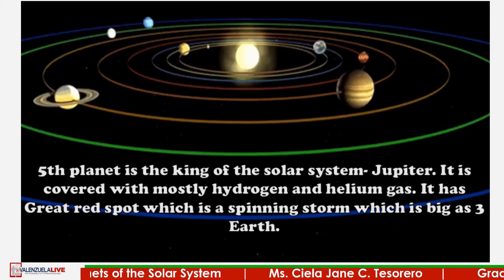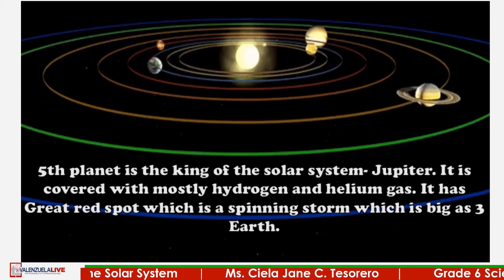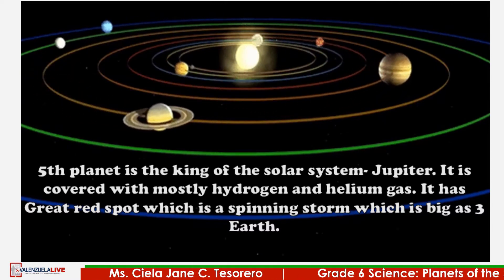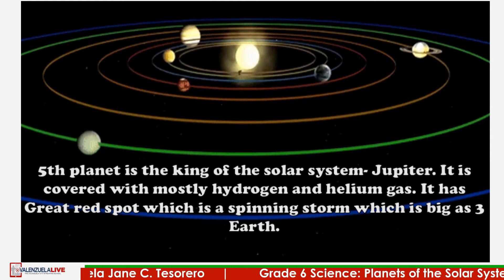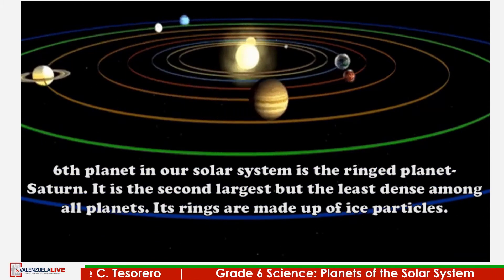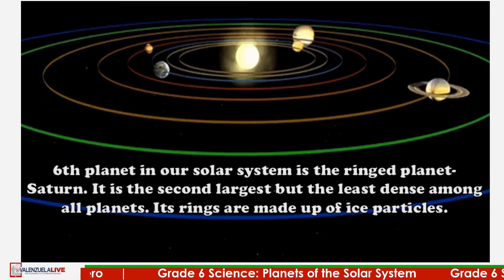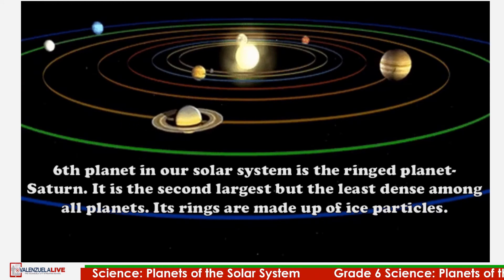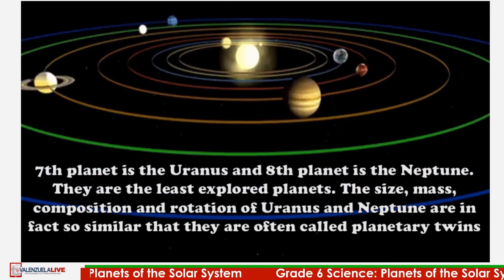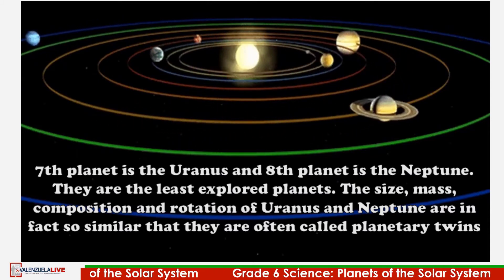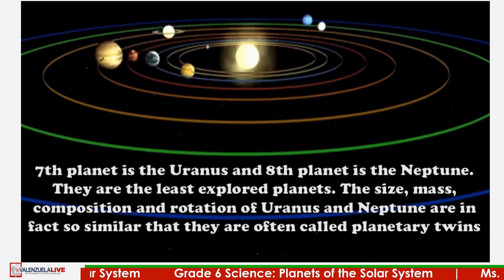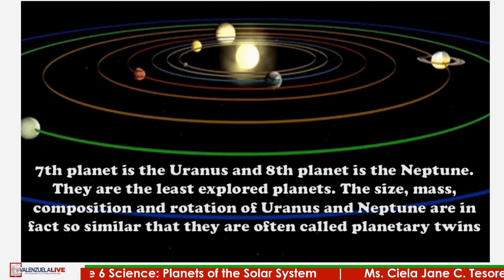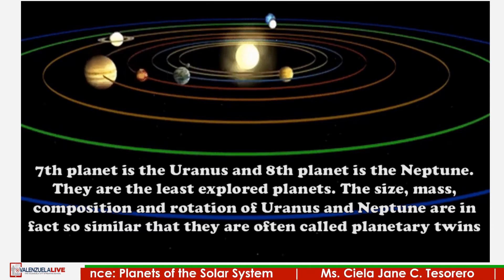The fifth planet is the king of the solar system, Jupiter. It is covered with mostly hydrogen and helium gas and has a Great Red Spot — a spinning storm as big as three Earths. The sixth planet is the ringed planet, Saturn — the second largest but the least dense among all planets, with rings made up of ice particles. The seventh planet is Uranus and the eighth is Neptune. They are the least explored planets, and in fact their size, mass, composition, and rotation are so similar that they are often called planetary twins.